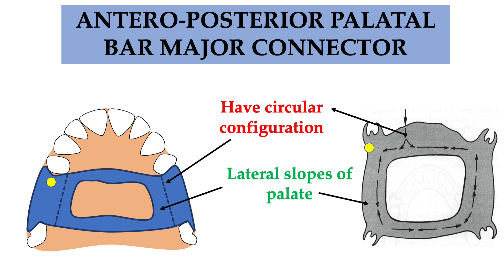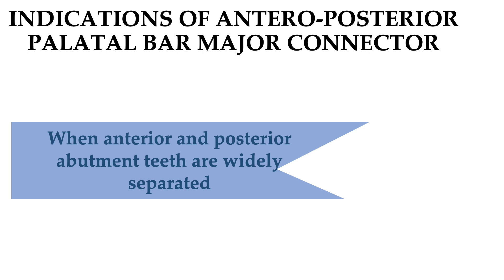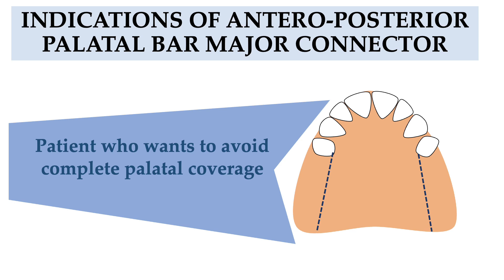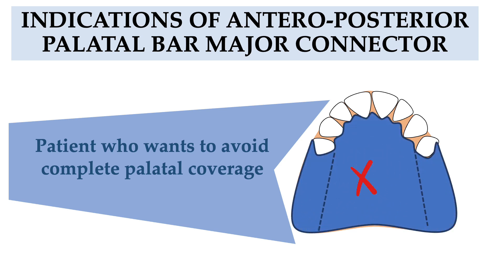Indications for the anterior-posterior palatal bar major connector: when anterior and posterior abutment teeth are widely separated, meaning it can be used for large edentulous spans. It is used when many teeth are missing anteriorly — cases where the previous two connectors are insufficient. It is also used for patients who want to avoid complete palatal coverage, since taste sensation is preserved.